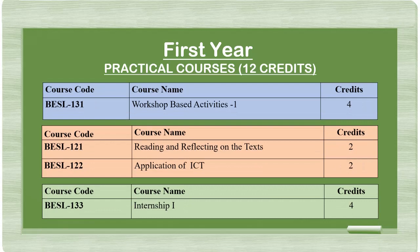In the first year there are also practical courses. The first practical component is a workshop of 12 days duration worth four credits. There are two EPC courses — Reading and Reflecting on the Text and Application of ICT — each of two credits, and one internship of four credits.